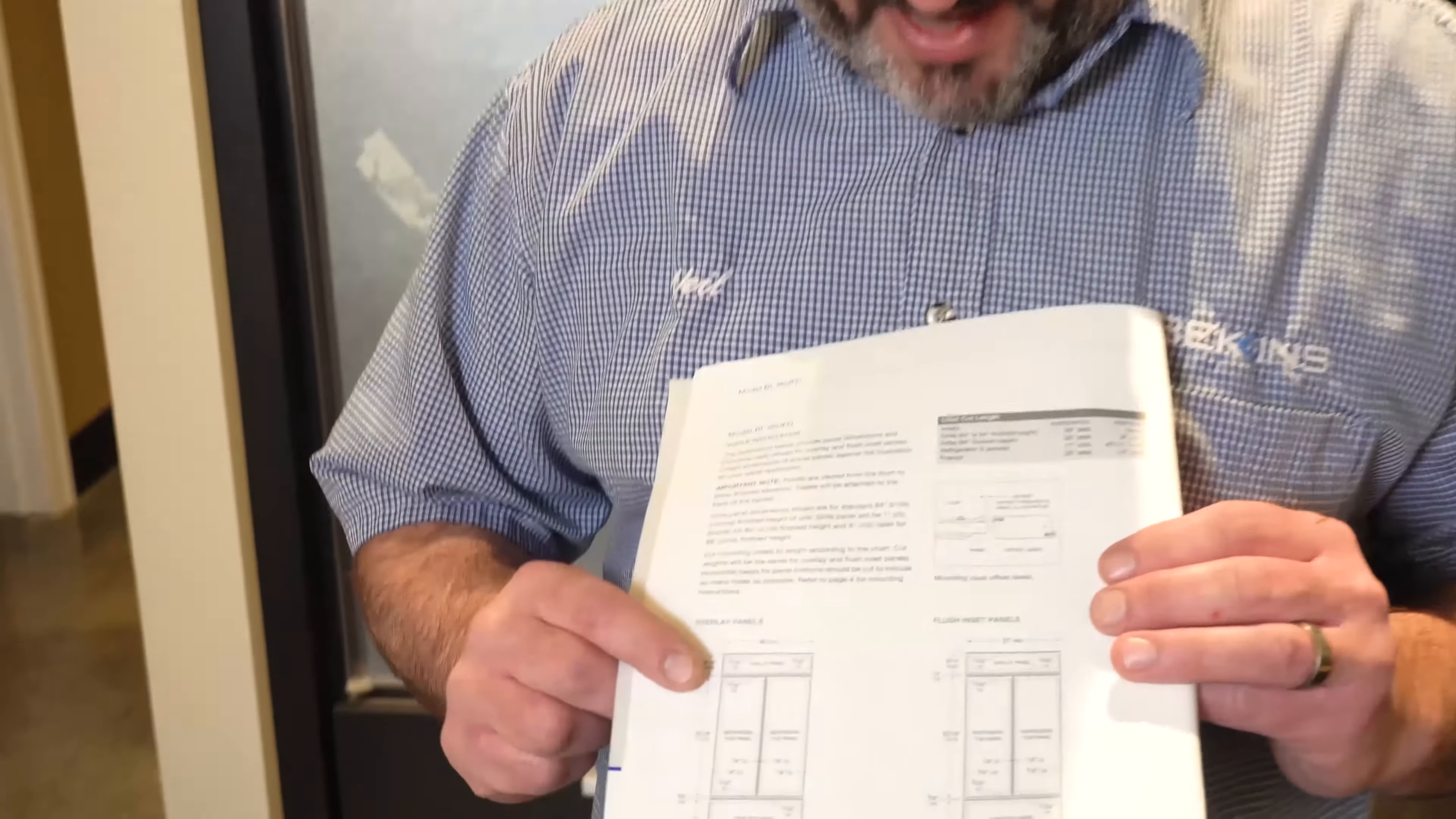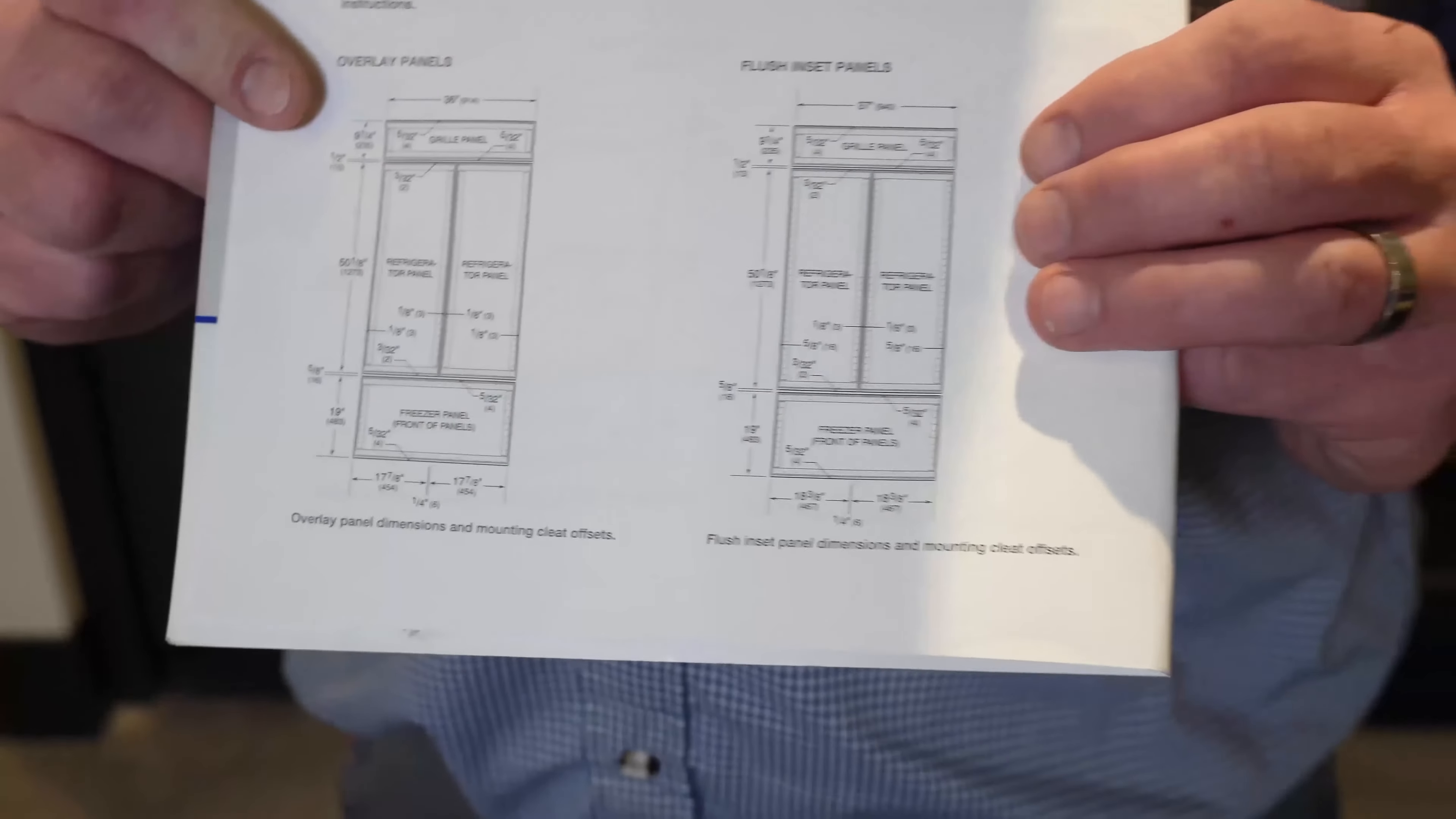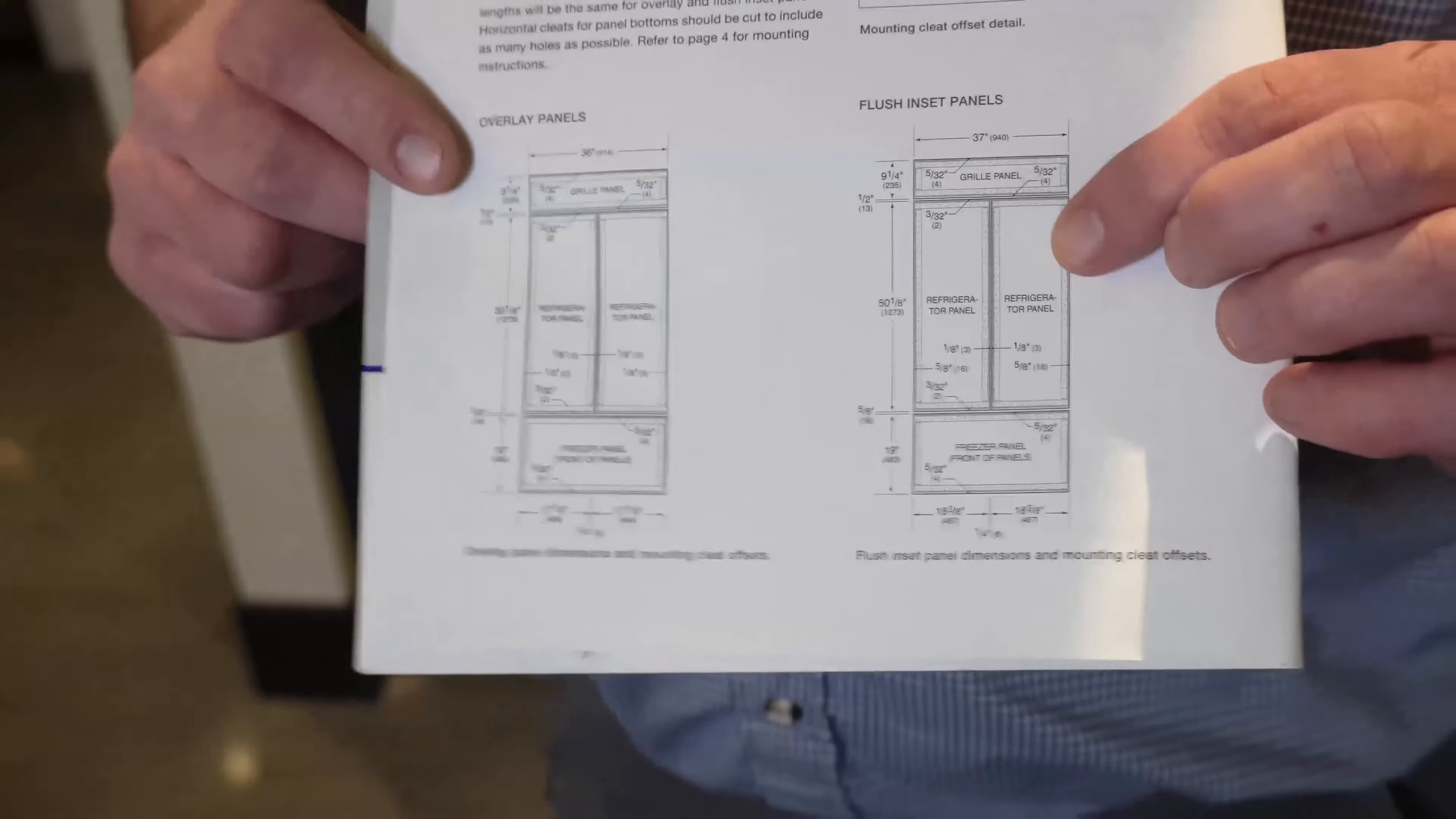So we happen to have the BI-36 behind us, so I looked up the instructions for that. It actually has overlay or flush inset. We happen to have a flush inset style. So if we were going to put these brackets on the back of our panels, we would use this configuration.